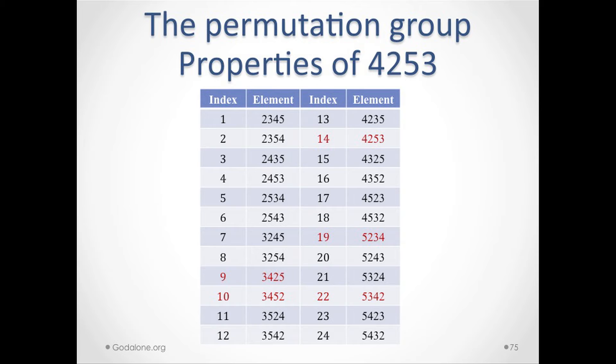We write the permutation group property of 4253. Looking at this table, the 19th element is 5234. Let's see the highlighted ones and their properties.